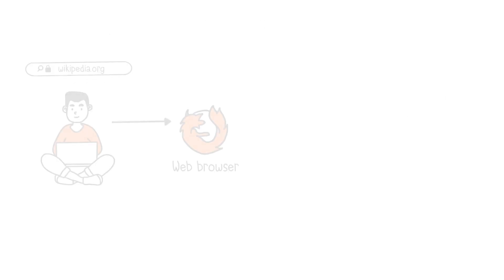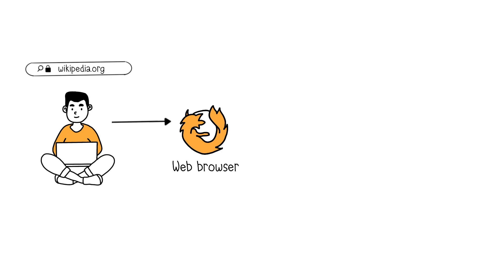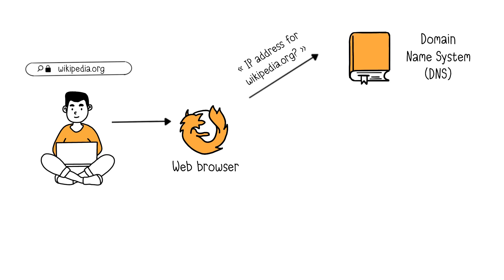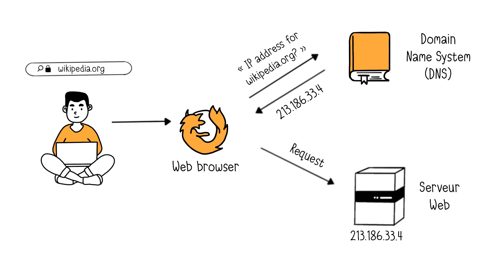How does this work in real life? From your computer at home, when you want to access a website like wikipedia.org, your browser needs the IP address to contact the right web server hosting the website. But remembering something like 95.145.2.3 is complicated, not to mention all the other IP addresses. That's why today we use domain names, like wikipedia.org. However, your web browser still needs to find the IP address of the web server hosting the site to access it. For this, it relies on the domain name system, or DNS, to know the IP address associated with the corresponding domain name. And it's this IP address that allows the browser to know which web server to contact. The role of the DNS is simply to associate a domain name with an IP address.